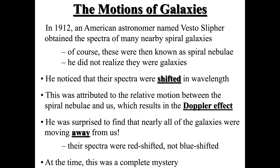The first point is about the motions of galaxies in the universe. There was an astronomer called Vesto — an American astronomer. In 1912, he looked at the spectra of some nearby spiral galaxies. These galaxies back then were known as spiral nebulae, because we did not realize they were galaxies at that time. You probably learned in the morning how we discovered the Andromeda galaxy using Cepheid variables. Similarly, this American astronomer was looking at spectra of these nearby spiral galaxies.